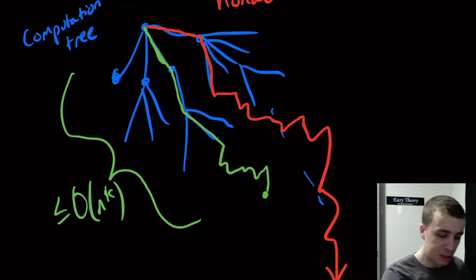And let's look at this green path right here. So this says that if there is an accept or reject configuration right here and it's at most n to the k steps, then that means that we could make these choices right here. And we will accept in at most some constant, because I put the O here, some constant times n to the k.